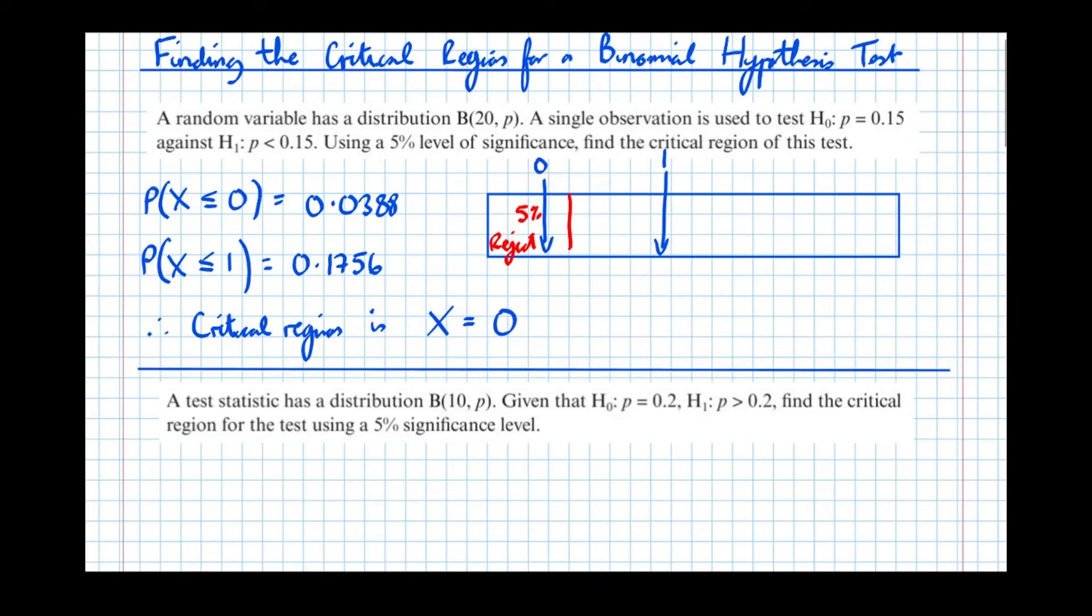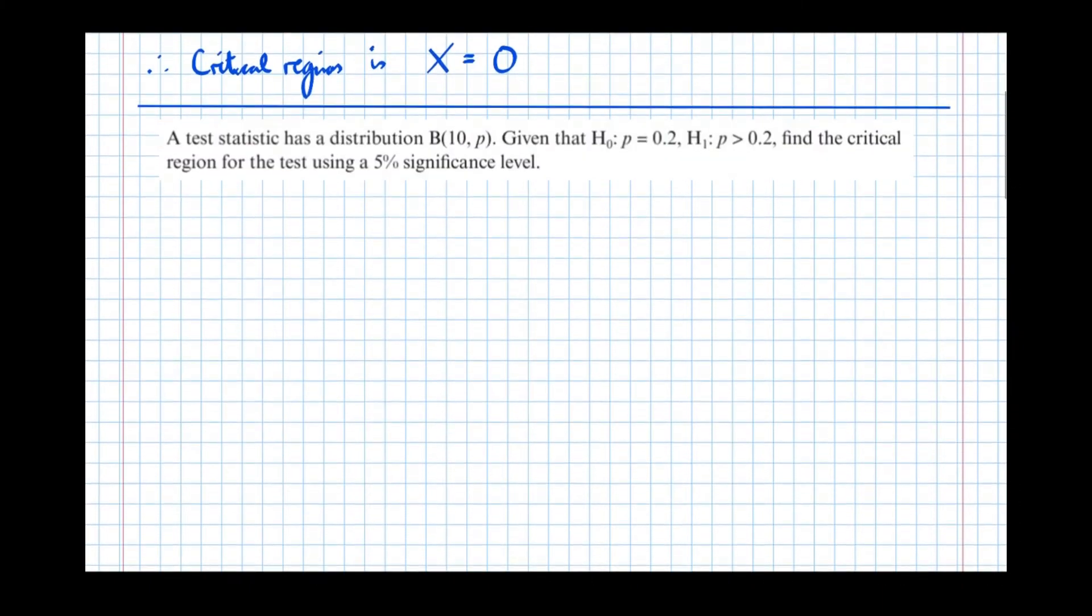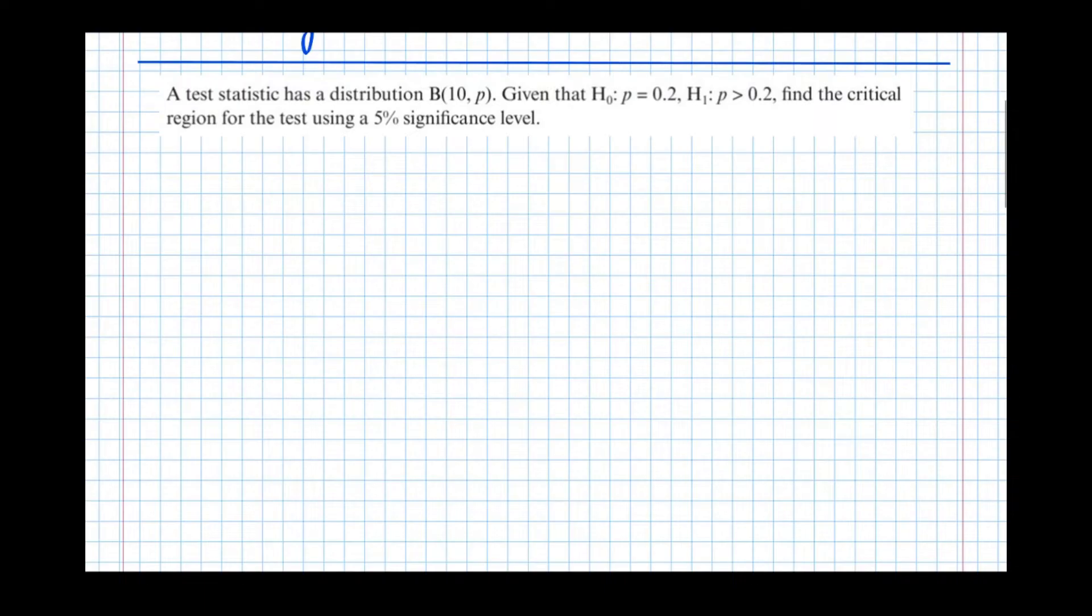So if we now take another example, where we're testing the right-hand tail of a binomial distribution, the method's a bit different and a bit more difficult. So it says a test statistic has distribution binomial 10p. We're proposing that the probability is 0.2. That's our null hypothesis. And an alternate hypothesis has been made where the probability is greater than 0.2. Find the critical region at the 5% significance level.